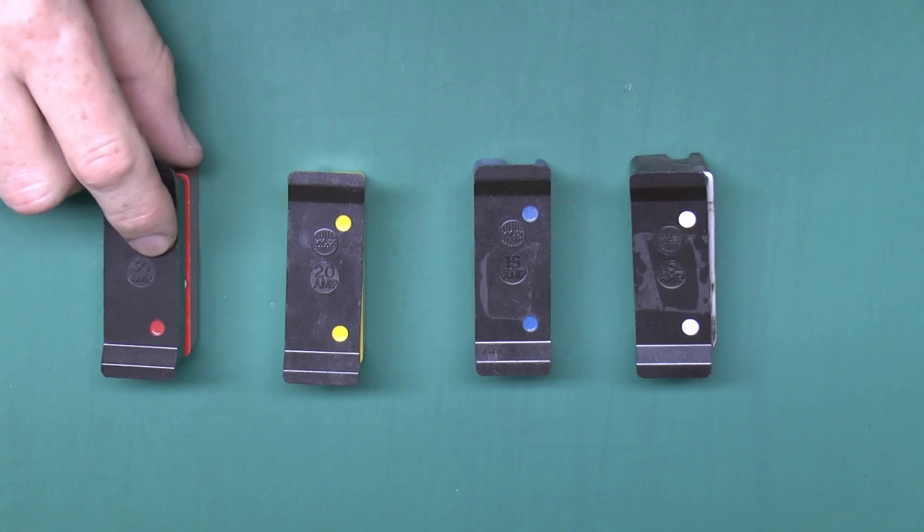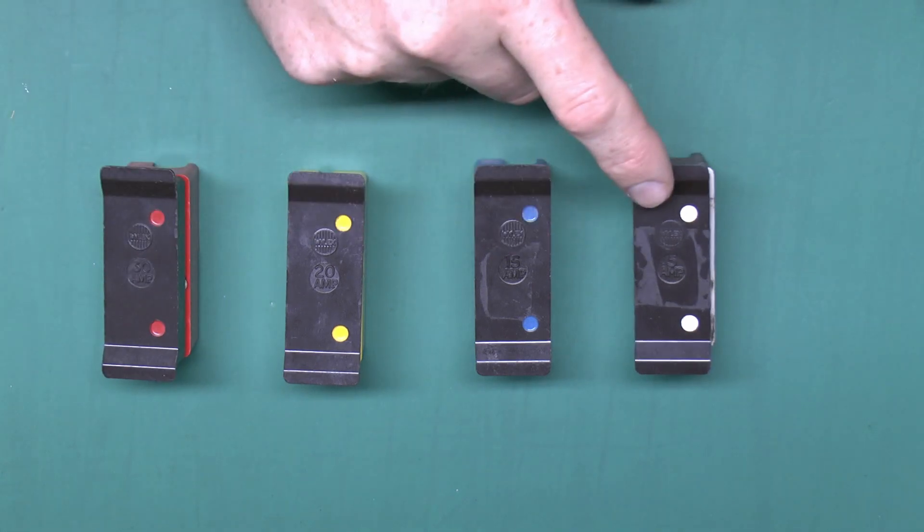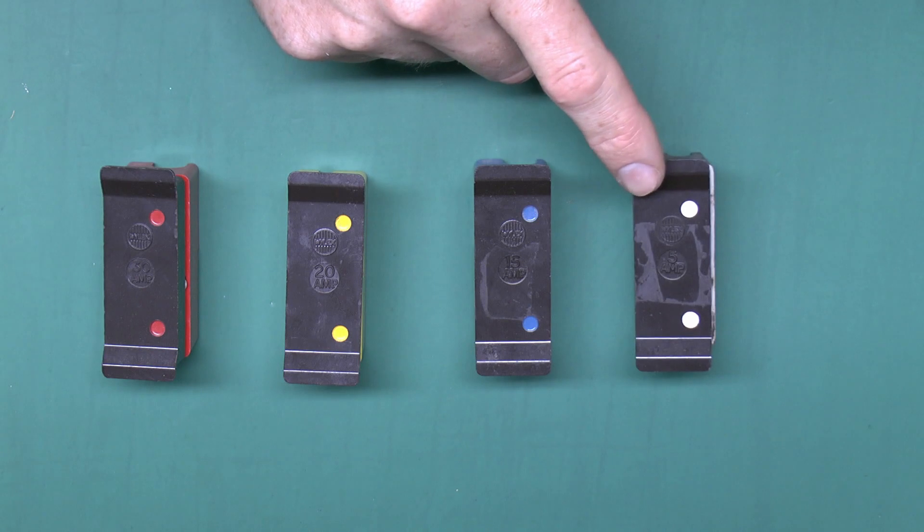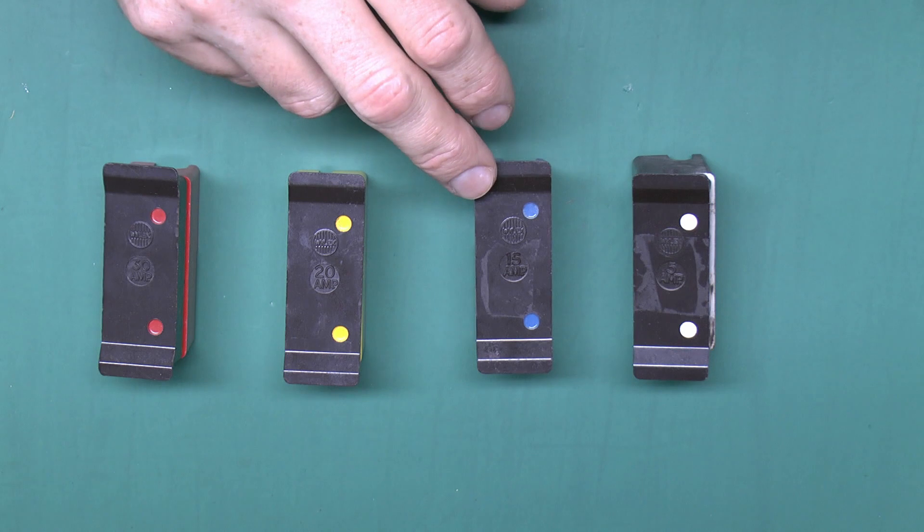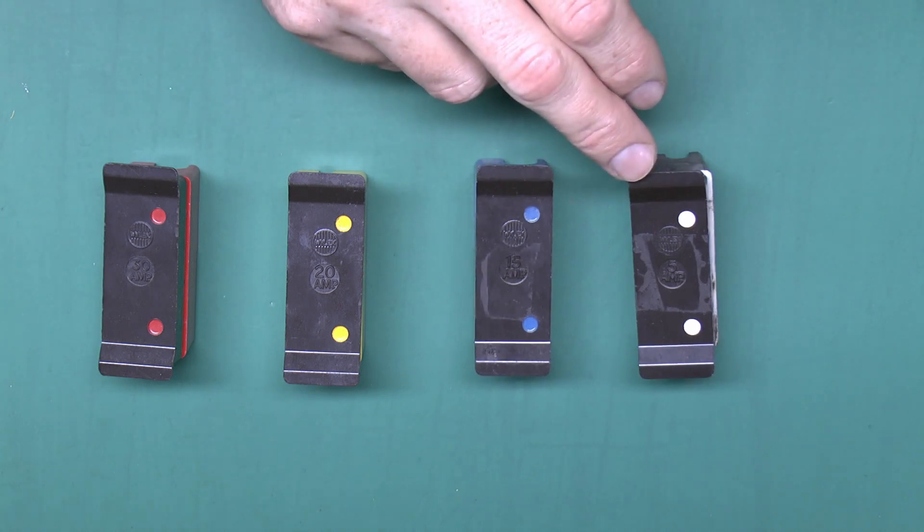They're all marked on the front there, so 30, 20, 15 and 5 and the color coding is normally pretty much the same. So we've got red for 30, yellow for 20, blue for 15 and white for 5.